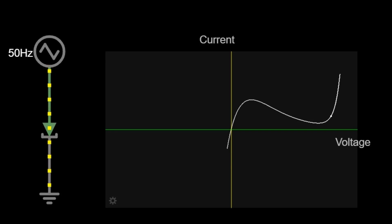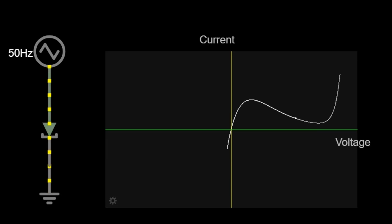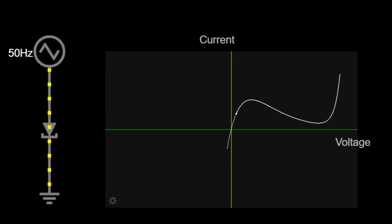But then, something weird happens. As we increase the voltage more and more, instead of more electricity flowing, less electricity flows for a while. This is very strange because in most things, when you push harder, you get more output. But in a tunnel diode, there is a special place where more push actually means less flow. This is called the negative resistance region.